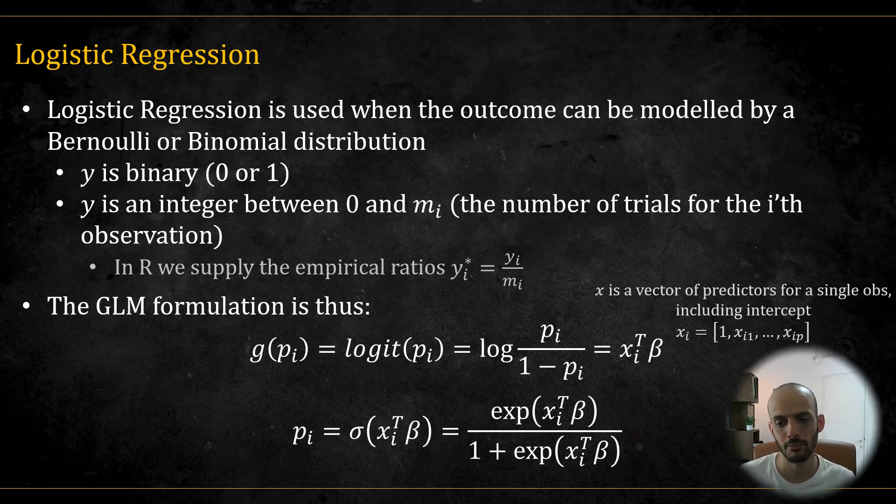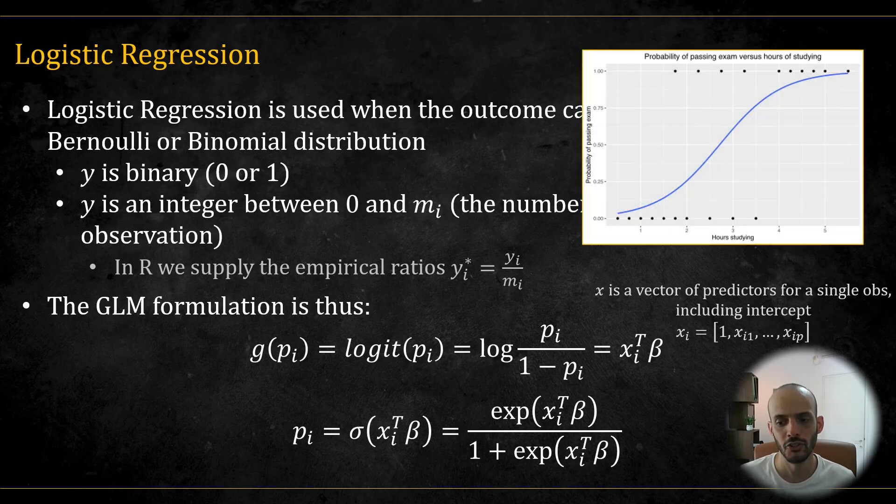In essence, what this model captures is that for certain x values, the probability of observing a 1 is higher than for other x values. And this relationship can be visualized by the blue curve over here, where on the left we have lower probabilities. On the left we have low x's with lower probabilities of getting a 1, and as x increases to the right, we have higher probabilities of getting a 1 on the y.